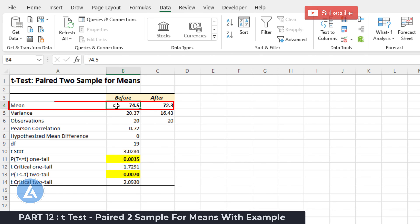In this case, the mean resting heart rate was 74.5 and after the running program, it was decreased to 72.3. In the earlier case, the variance was 20.37 and after the running program, it is 16.43.